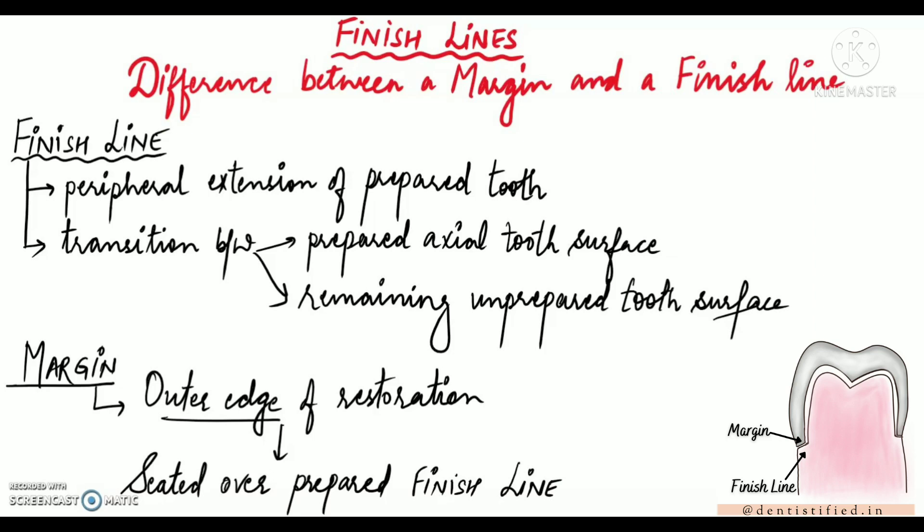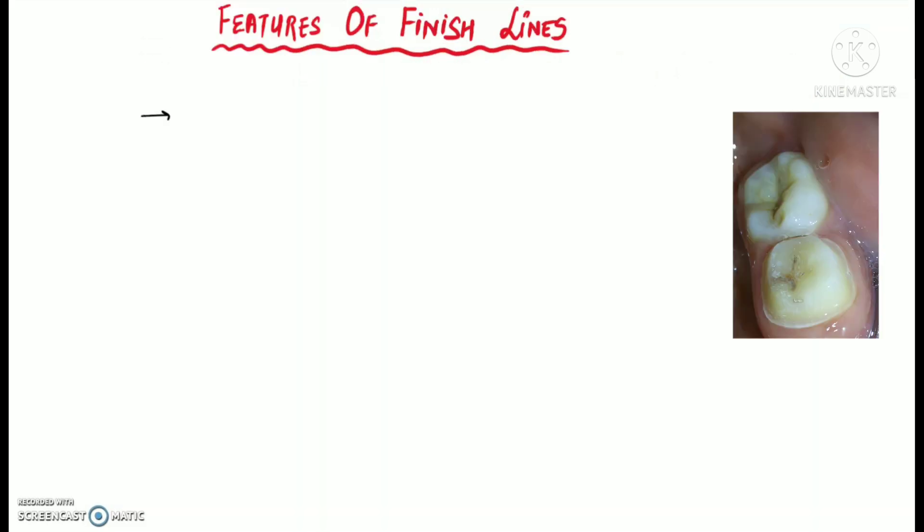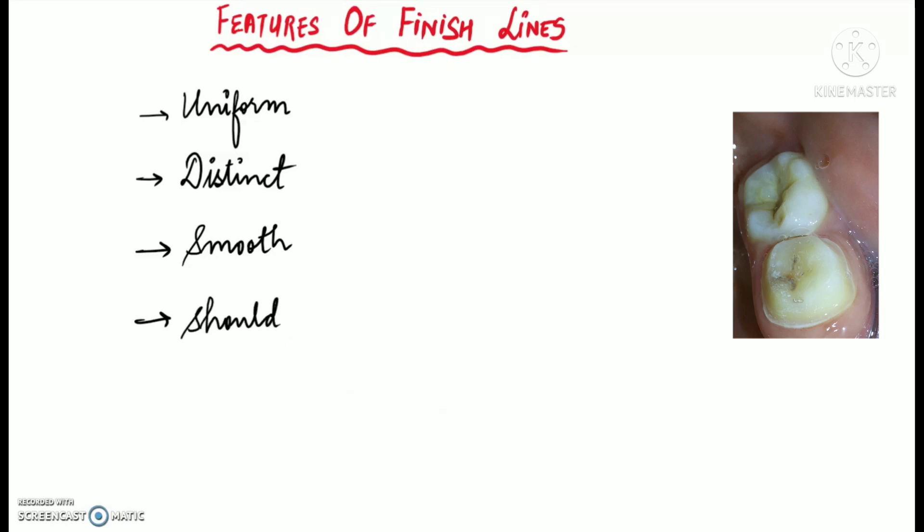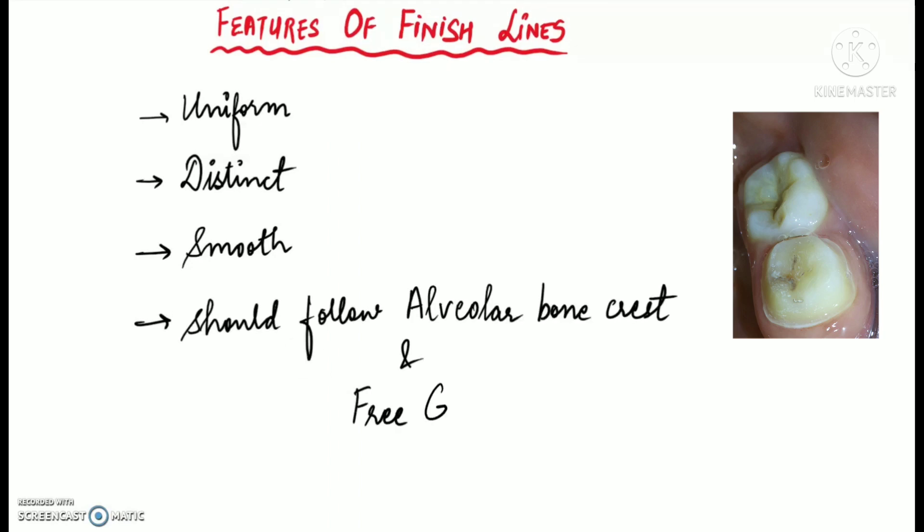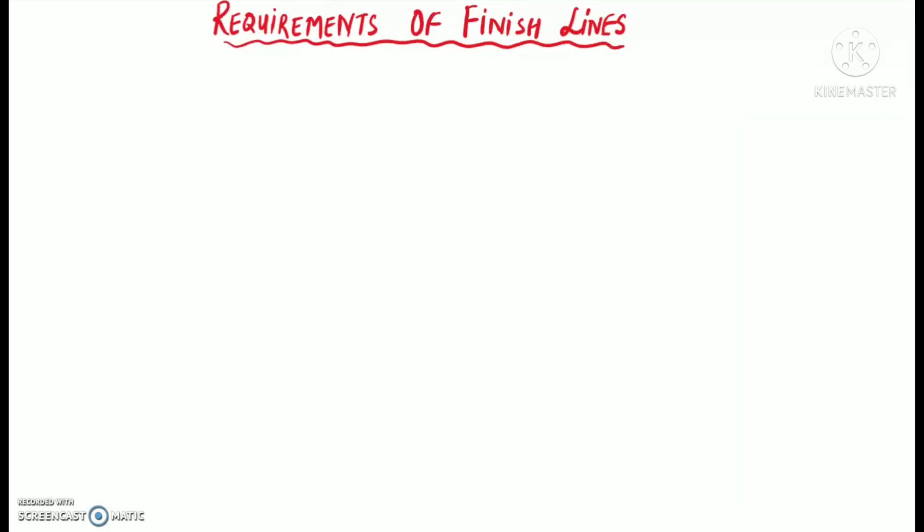So I hope now you are clear with the difference between a finish line and a margin. Now let's talk about the features of finish lines. So a good finish line should be uniform, it must be distinct, and it should be smooth. If the finish line is not smooth, it will interfere with the seating of the restoration. Therefore there should be no irregularities. It should be smooth and uniform. It should follow the alveolar bone crest or free gingival margin.